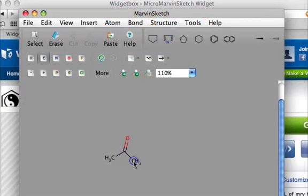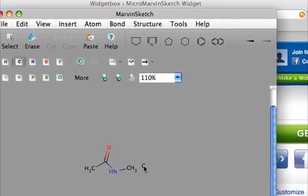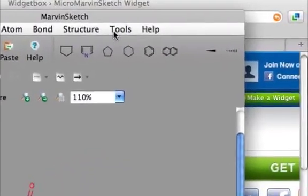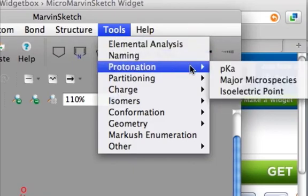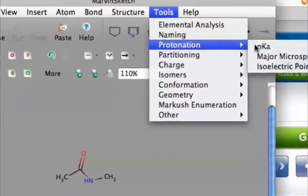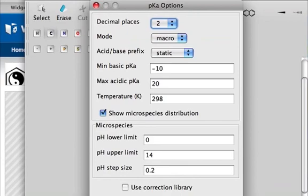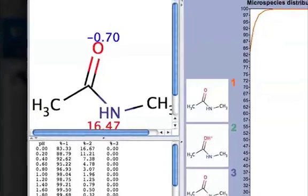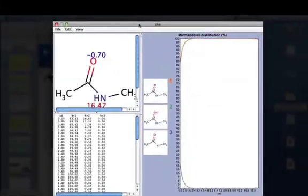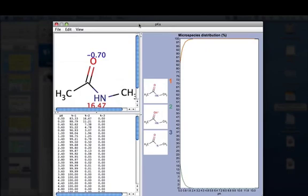Now let's say you want to find out the pKa of this particular molecule here. You can go to Tools, Protonation, and pKa. Go ahead and accept the defaults that you get.